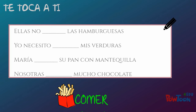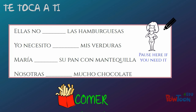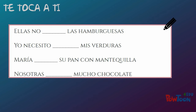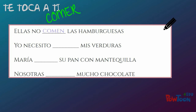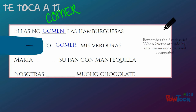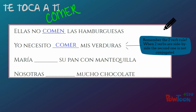Now let's practice with comer. Take a look at the next four statements and see if you can correctly conjugate the verb — remember to pause so that you have time to think. Did you get: ellas no comen las hamburguesas; yo necesito comer mis verduras; María come su pan con mantequilla; and nosotros comemos mucha chocolate?